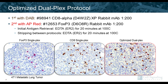The optimized assay uses DAB first with our CD8 clone, followed by the alkaline phosphatase red protocol with our FOXP3 clone. The initial antigen retrieval step was EDTA for 20 minutes at 100°C, and the stripping step between protocols was also EDTA for 20 minutes at 100°C — conveniently allowing the antigen retrieval step to double as the stripping step. This staining was performed on the Leica Bond RX, where citrate buffer is the ER1 buffer and EDTA buffer is the ER2 buffer. The application note referenced details a manual dual-plex IHC assay for CD8 and PD-L1, available on the CST website.